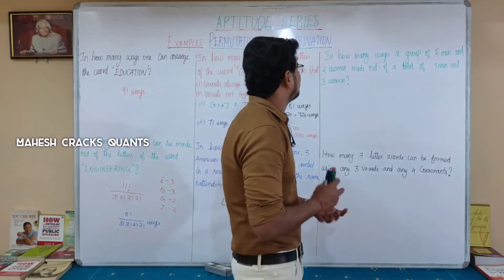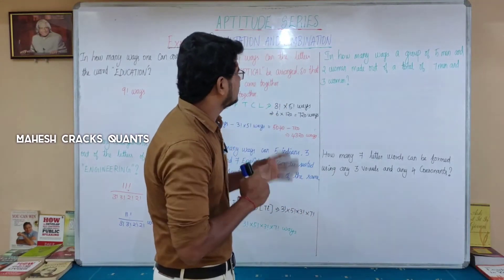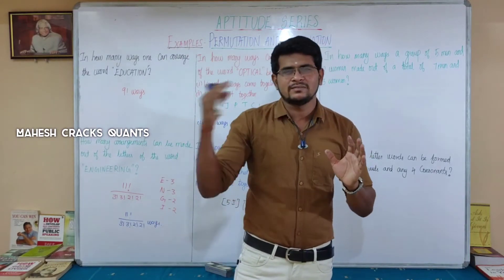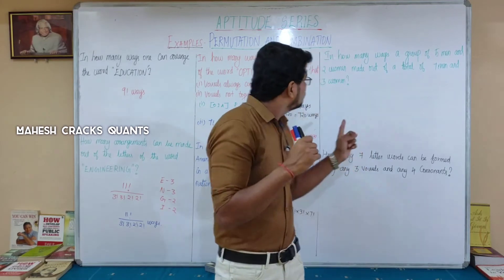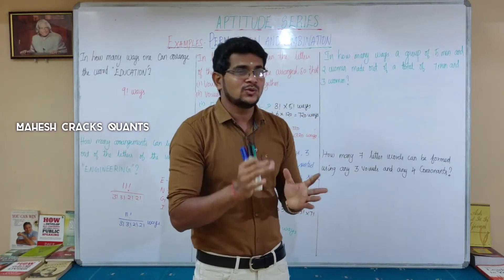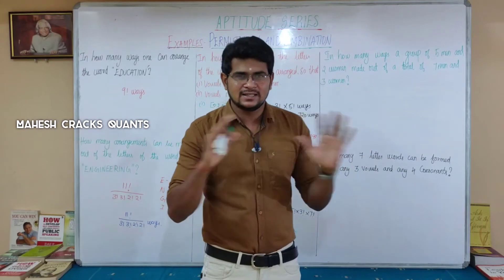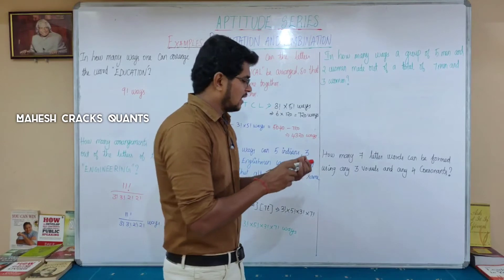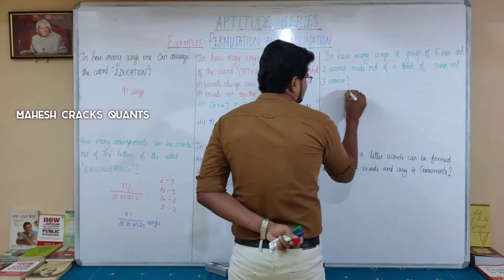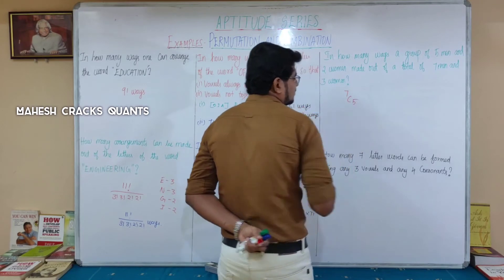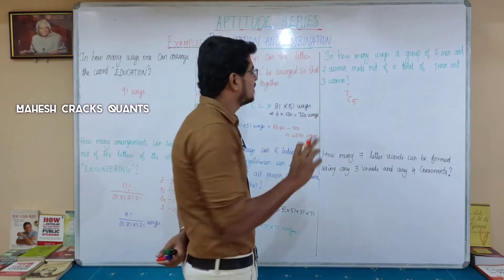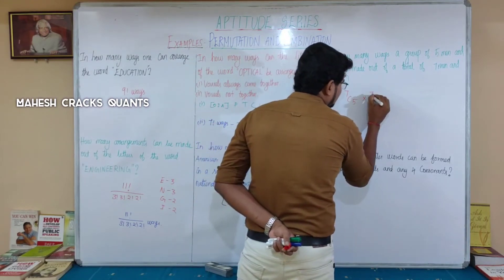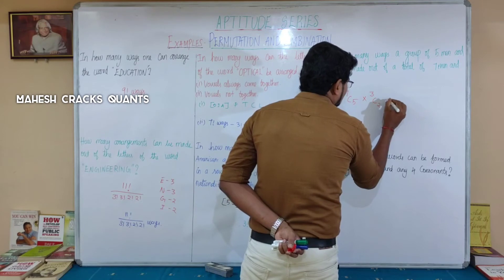Next question: in how many ways can a group of 5 men and 2 women be made out of a total of 7 men and 3 women? For 5 men from 7 men and 2 women from 3 women. Since there are no specified arrangements, it is a selection — a combination. So we use C(7,5) × C(3,2).